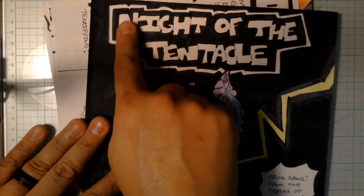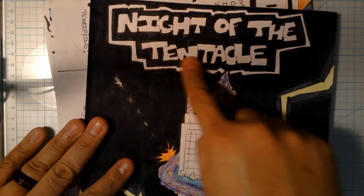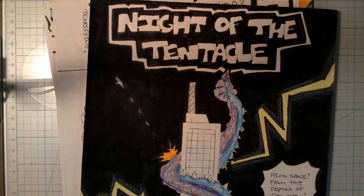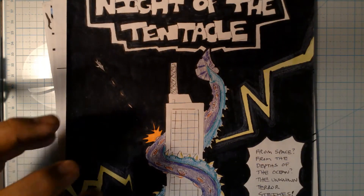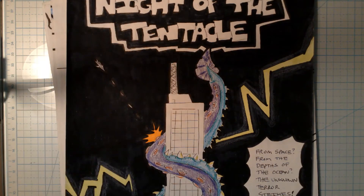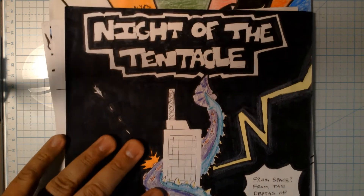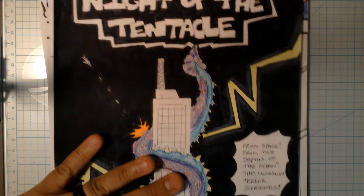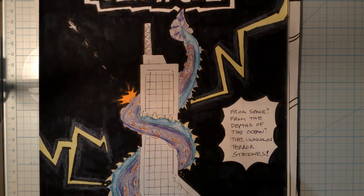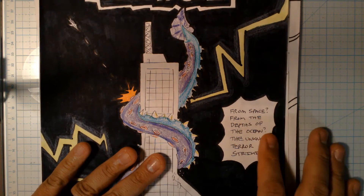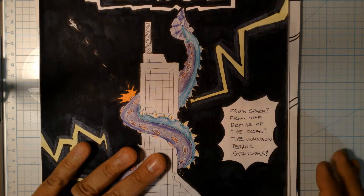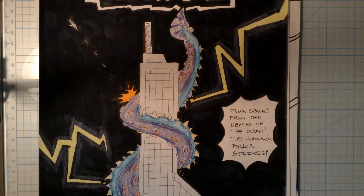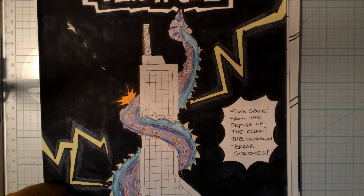Remember the title — nice and big, in a bold font. Not just a pencil line or a marker line — it's got to stand out and catch the eye, like we've got here on 'Knight of the Tentacle.' And remember a tagline of some kind — something like 'From space,' 'From the depths of the ocean,' or 'The unknown terror strikes.'